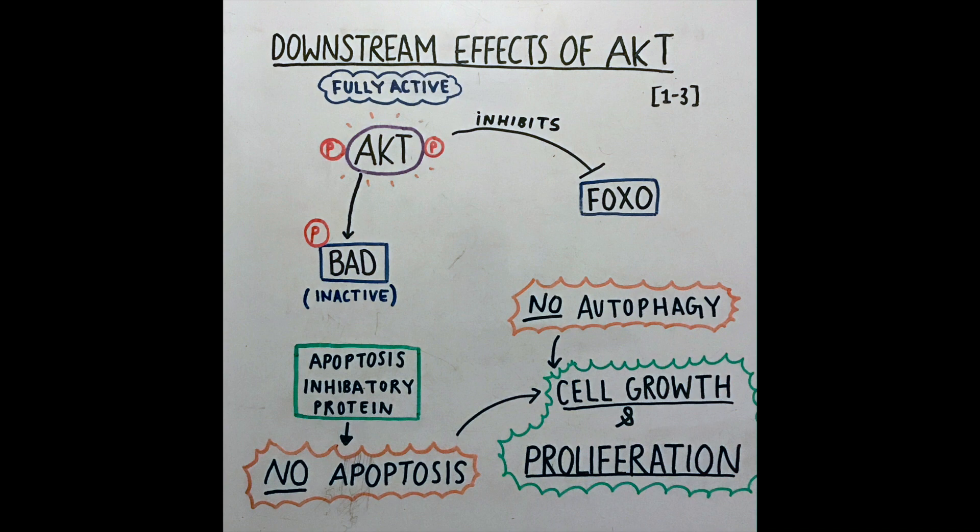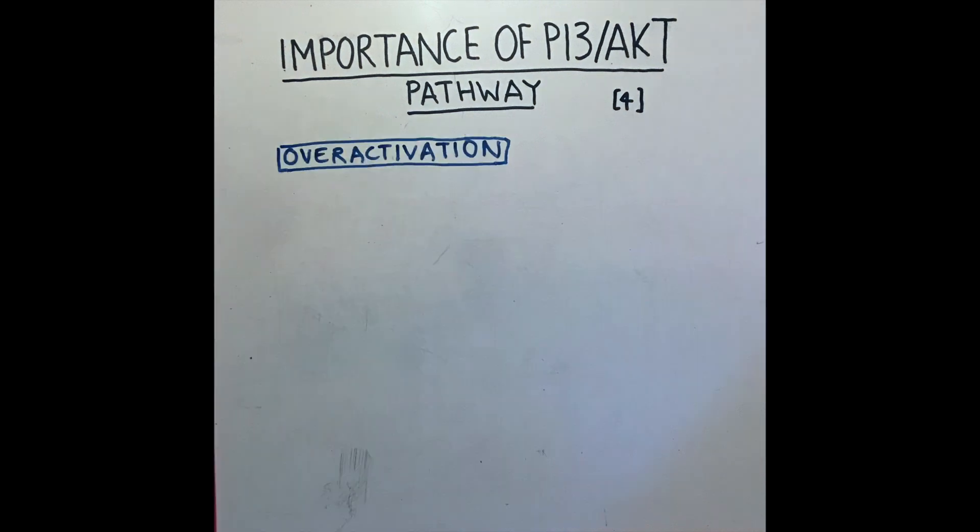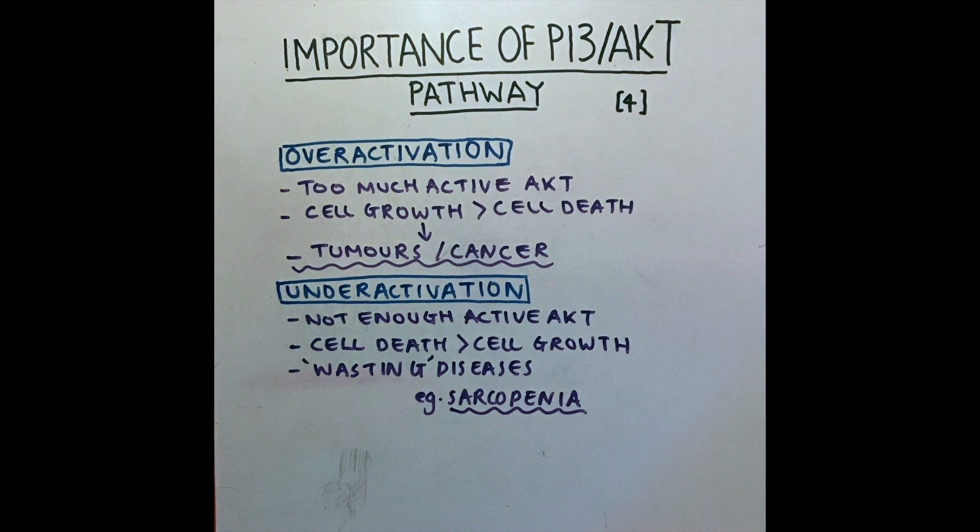The PI3 AKT pathway is important in disease physiology. Over-activation can cause excessive cell growth that can lead to cancers developing. Under-activation can cause diseases like sarcopenia, a muscle-wasting disease.